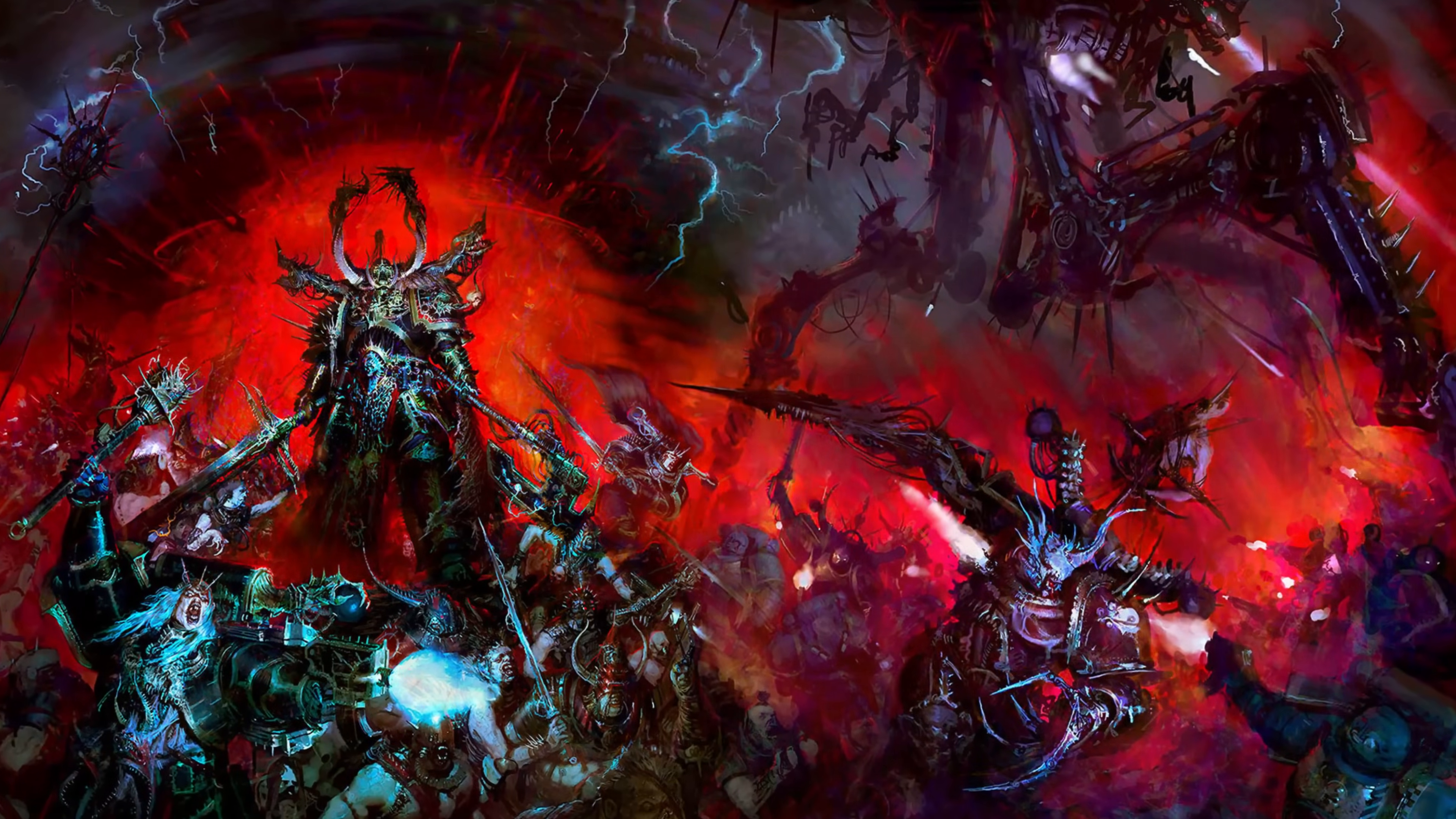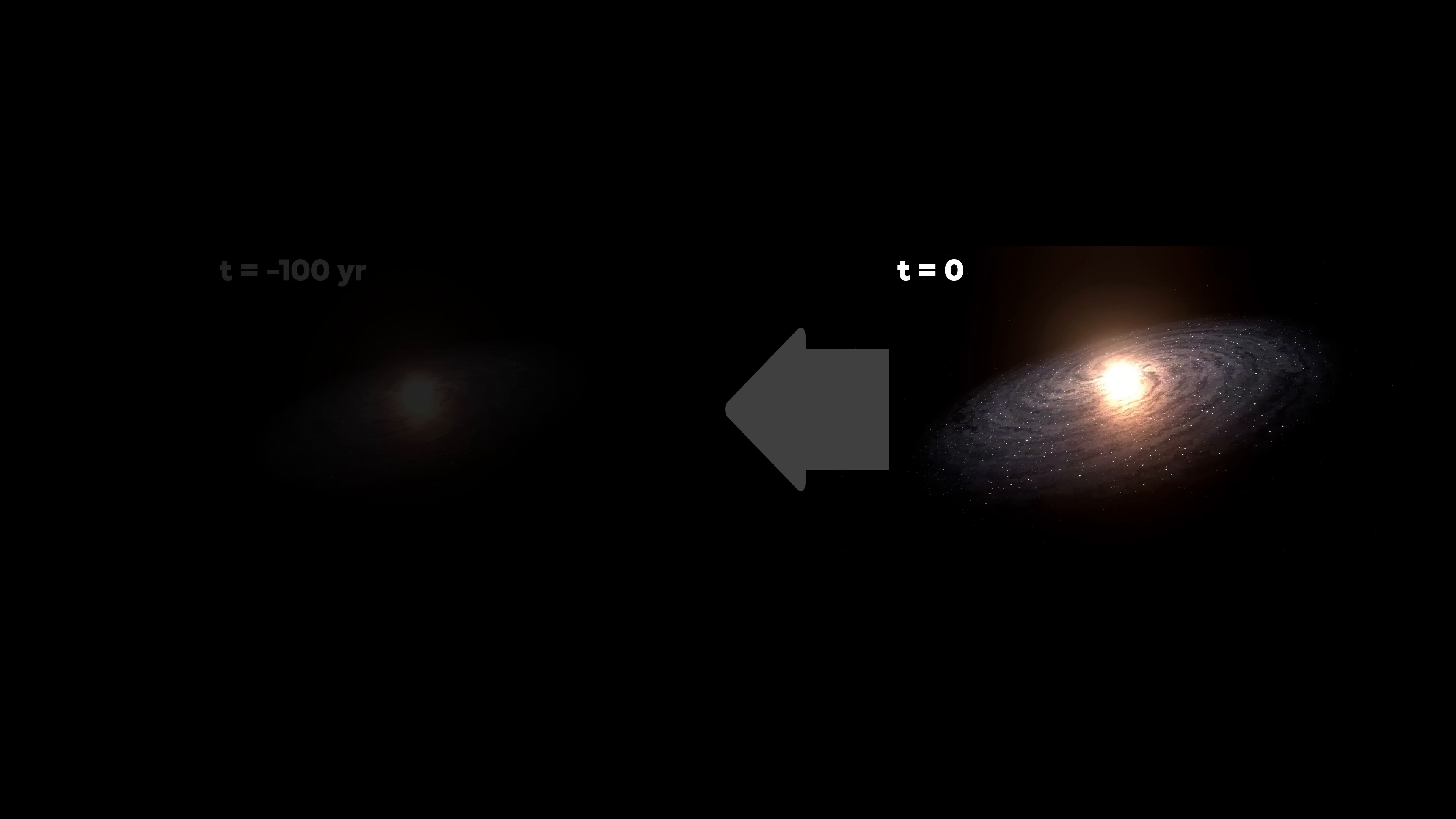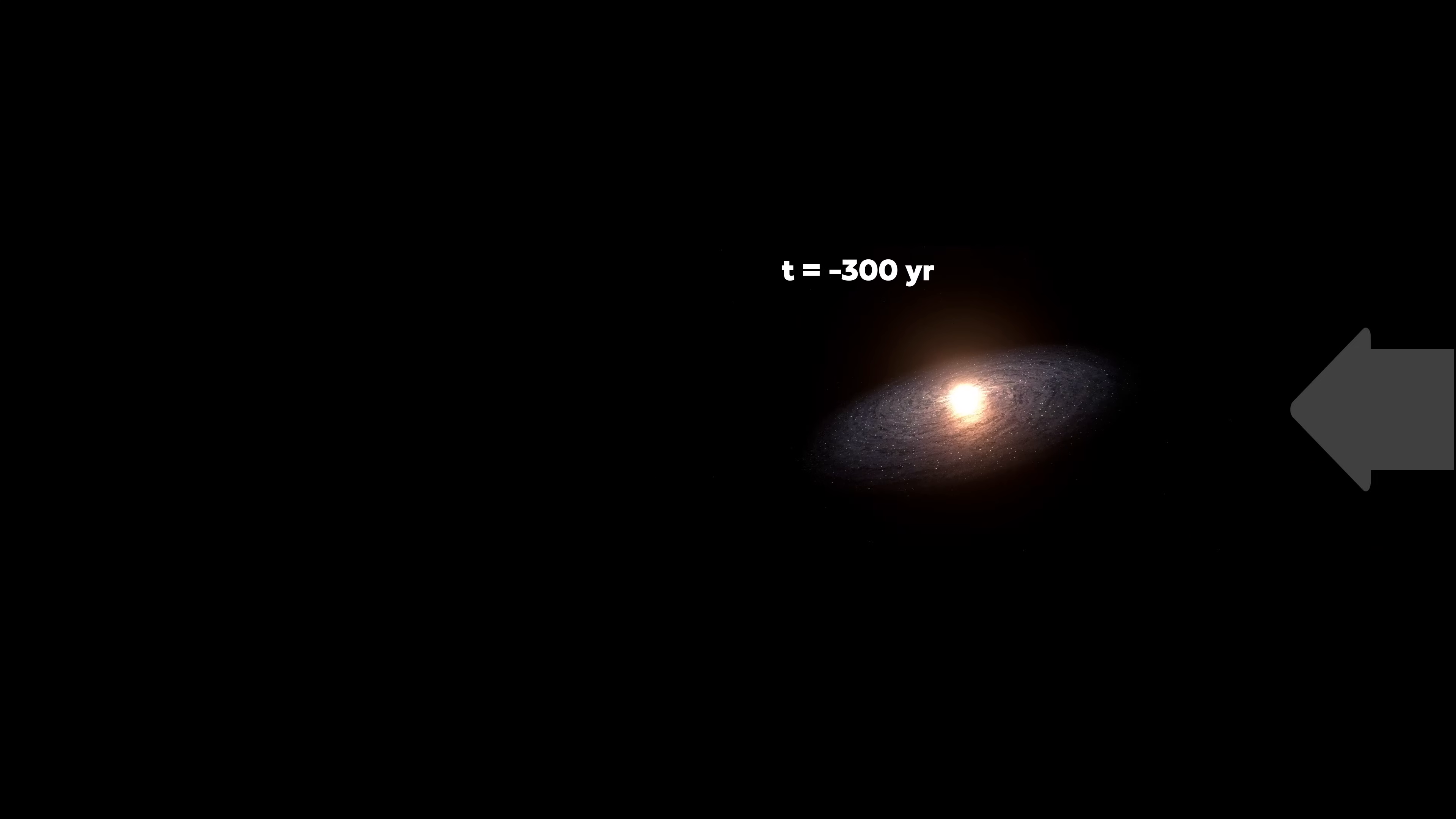One particularly cool thing this allows you to do is measure where stars are and how fast they're moving today, and then apply our fluid equations to that system. But instead of going forwards in time, turn the clock back. We can guess what the galaxy looked like 100 years ago. And then, using that as a starting point, we could apply our equations again, and guess what the galaxy looked like 200 years ago. Keep going backwards, and you can perform galactic archaeology, reconstructing the deep past of the galaxy.